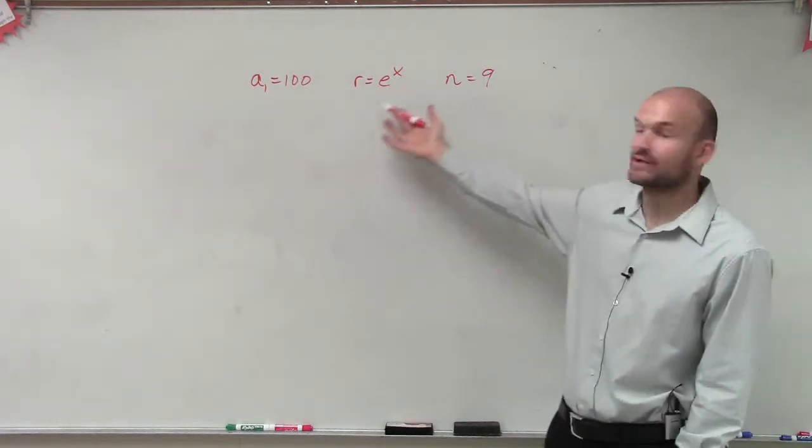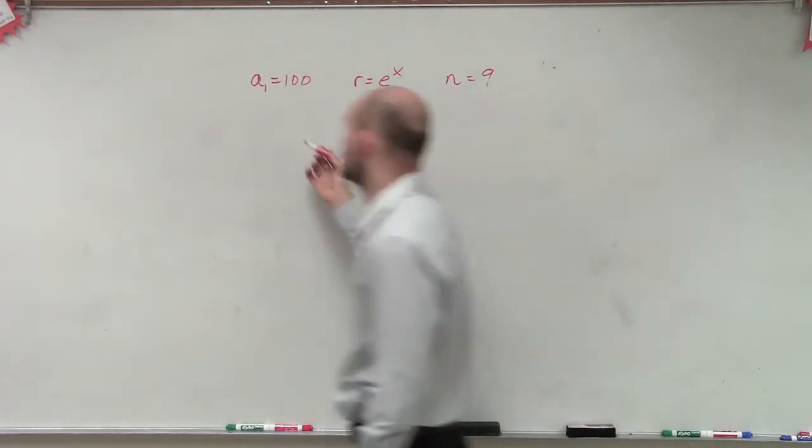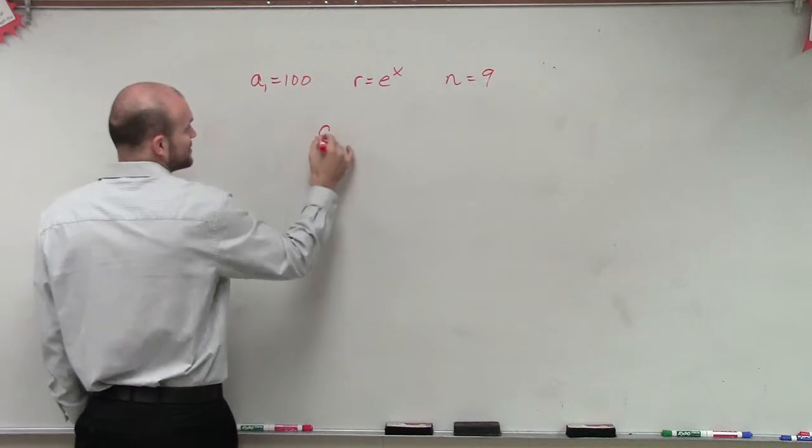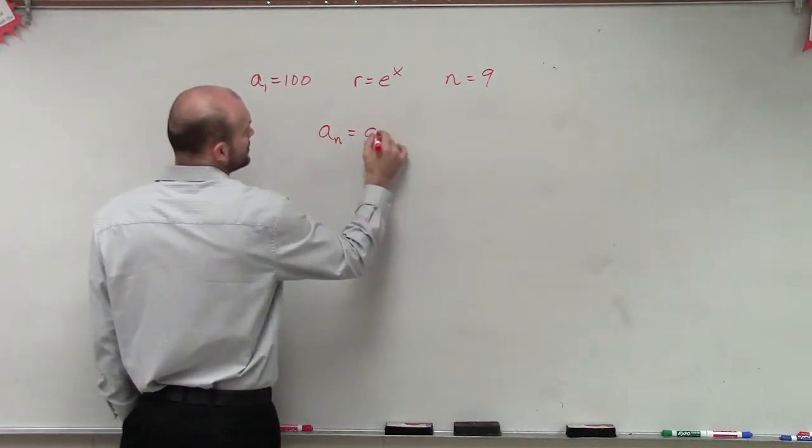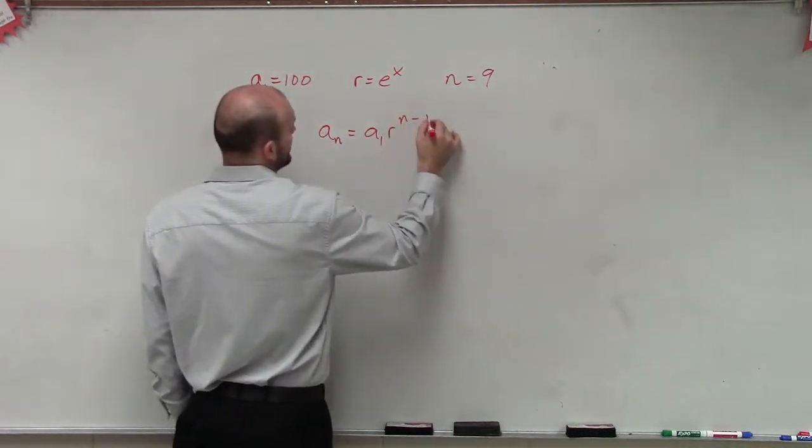We notice that we have a ratio, so that's going to be our geometric sequence. Therefore, since we have a geometric sequence, we know that a_n equals a_1 times r raised to the n minus 1.